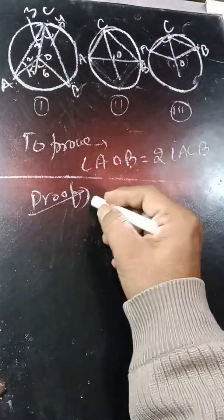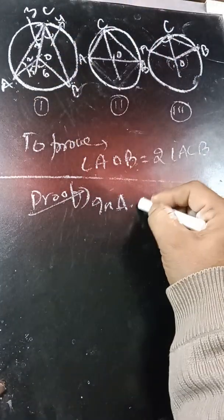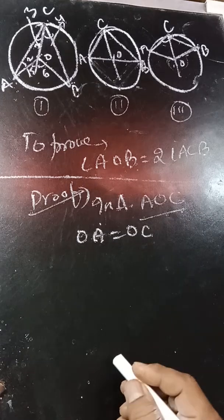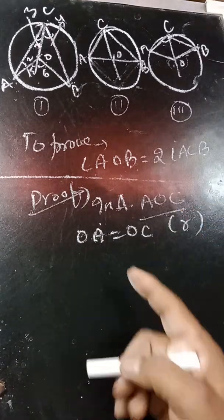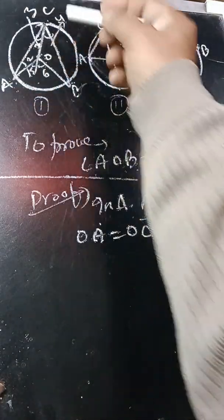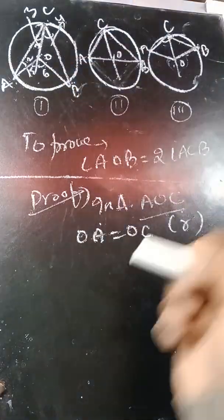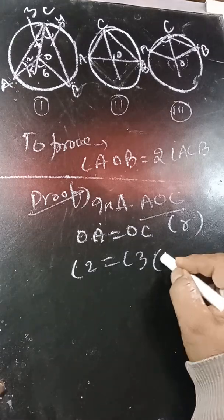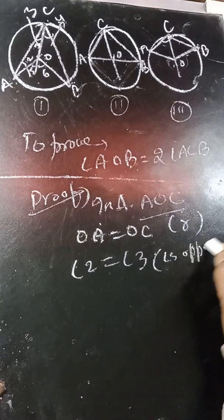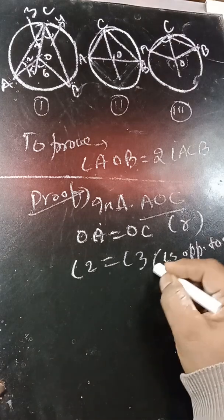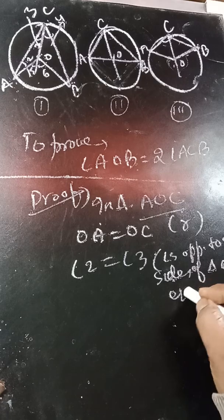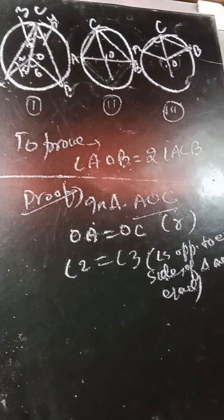In triangle AOC, OA is equal to OC, since they are radii of the same circle. If OA is equal to OC, we get angle 2 is equal to angle 3, since angles opposite to equal sides of a triangle are equal.